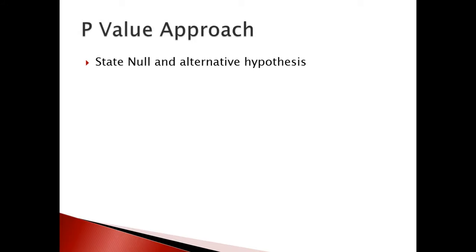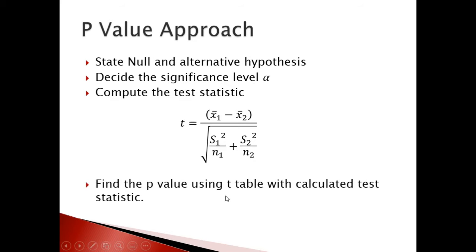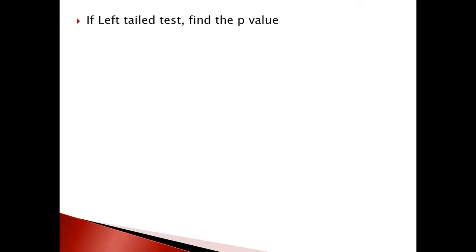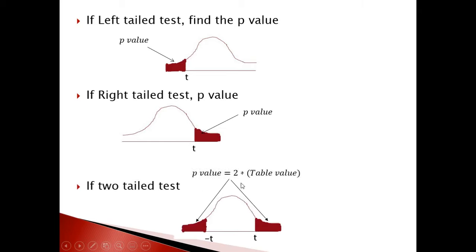Using the p-value approach: state the null and alternative hypothesis, decide the significance level alpha, compute the test statistic using the formula, then find the p-value from the t-table. For a left or right tail test find the corresponding one-sided p-value; for a two-tail test multiply the table value by two. Reject H₀ if the p-value is less than alpha.